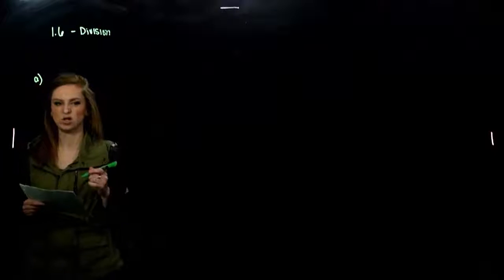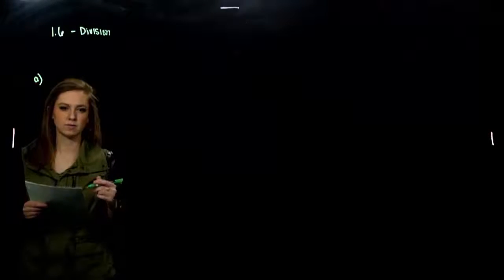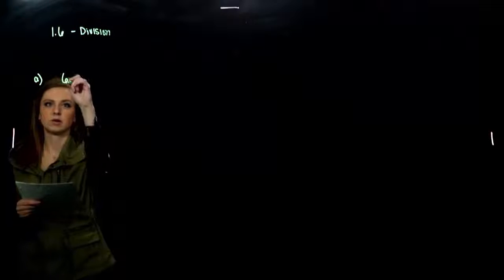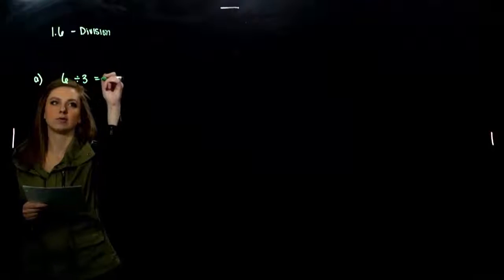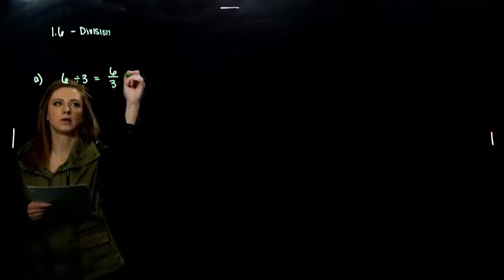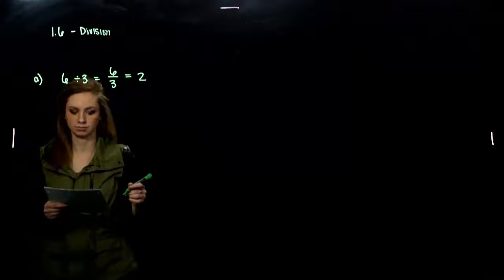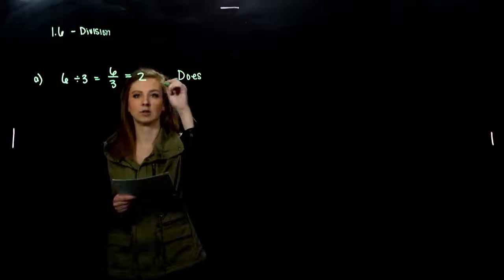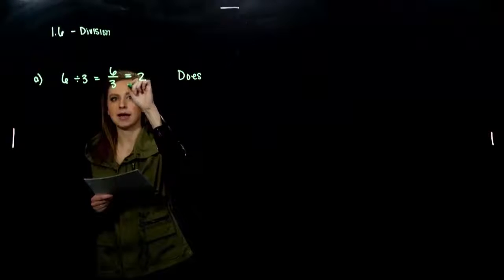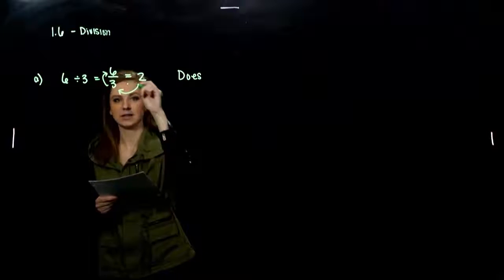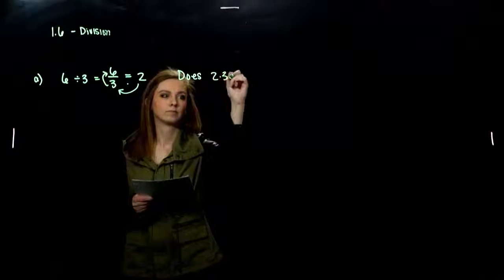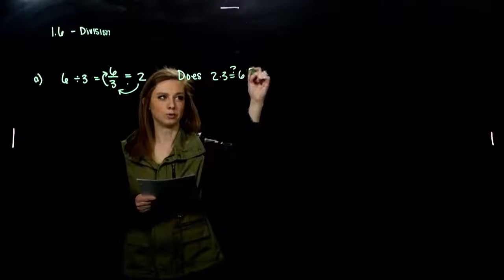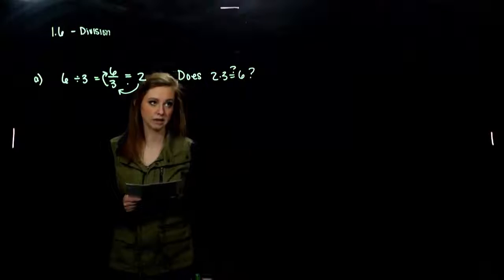So basically that just gives us a check to make sure that we've divided correctly. So we all know this: 6 divided by 3, we could rewrite it as 6 over 3, it's equivalent to 2. So we're asking, does 2 times 3 equal 6? Does it really hold true? Yeah, it does.